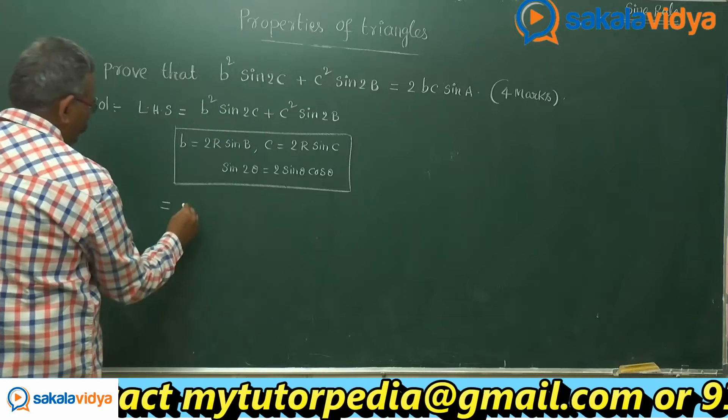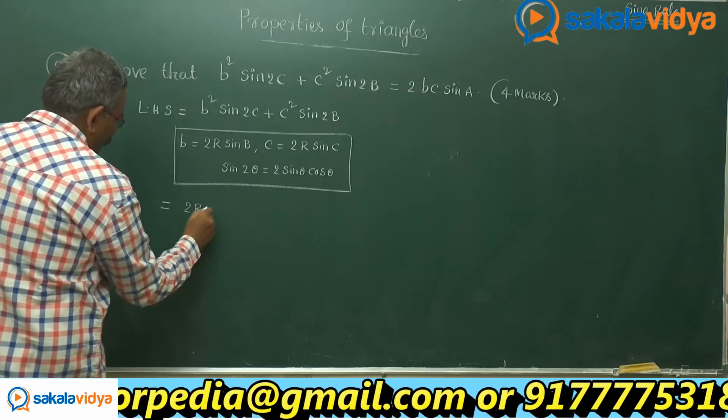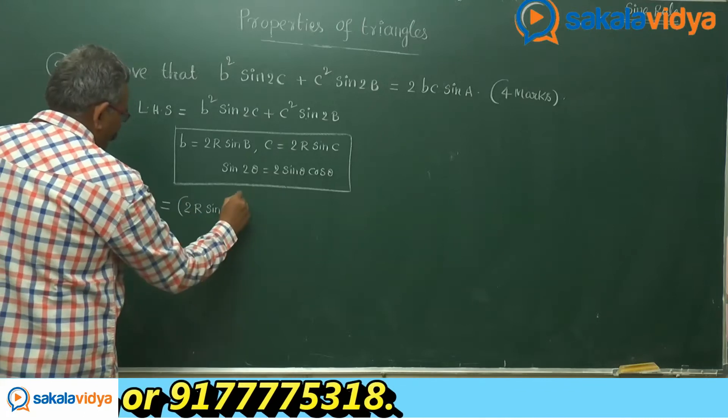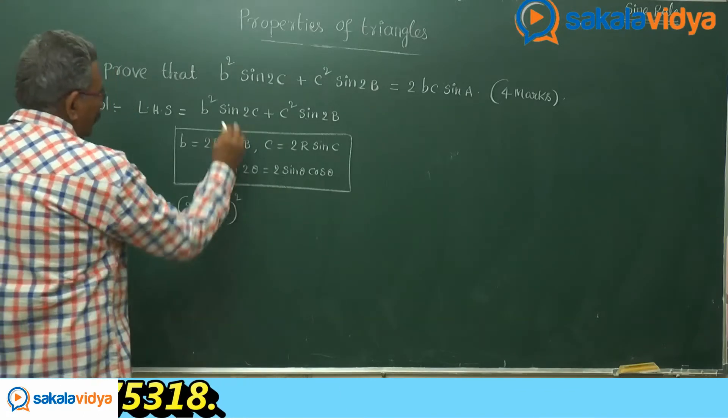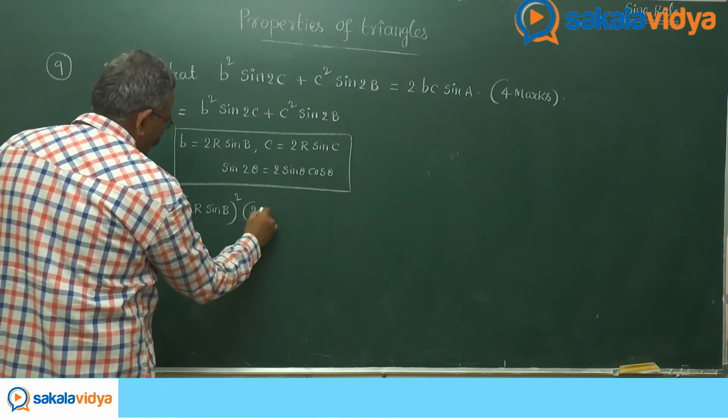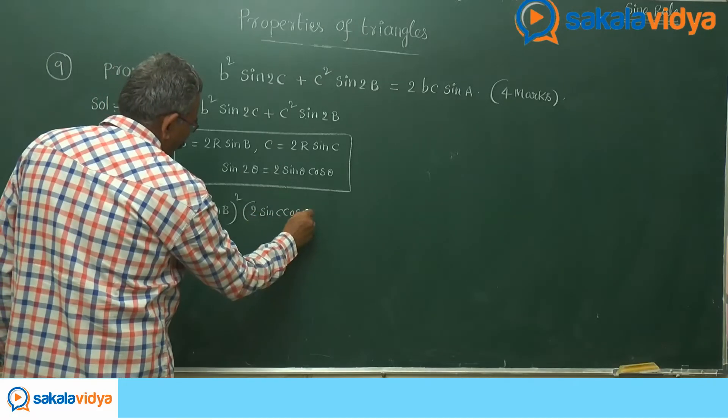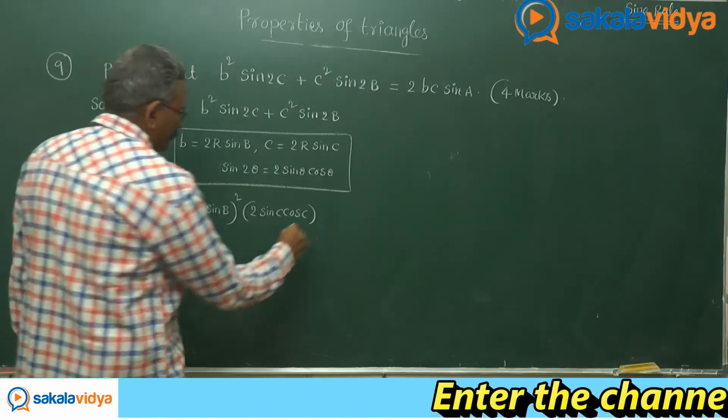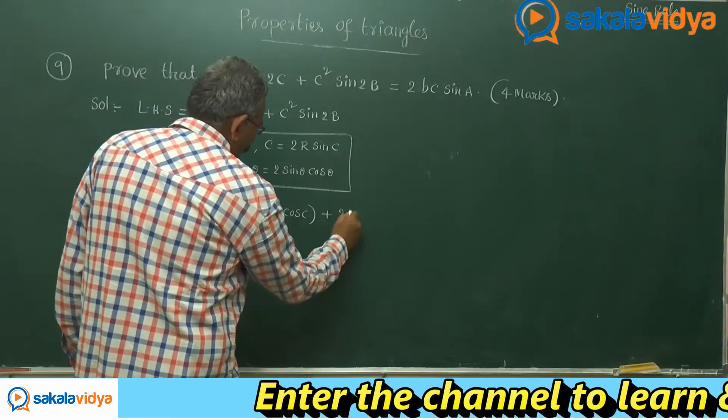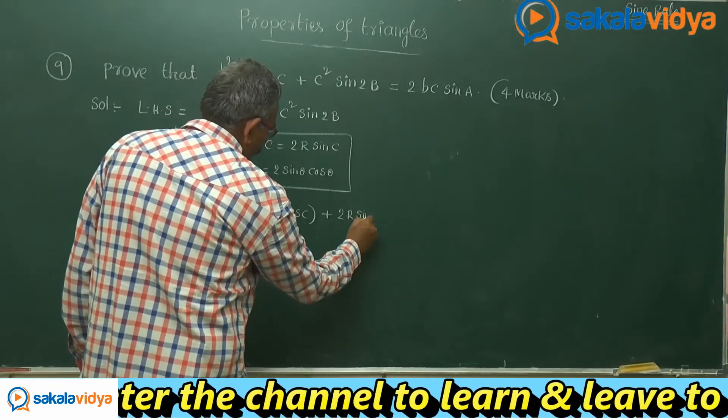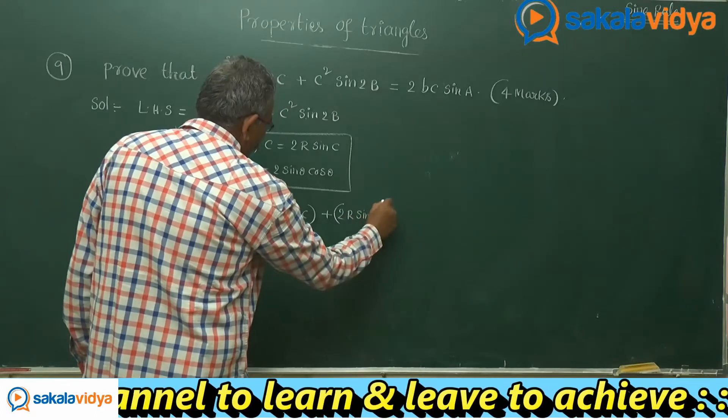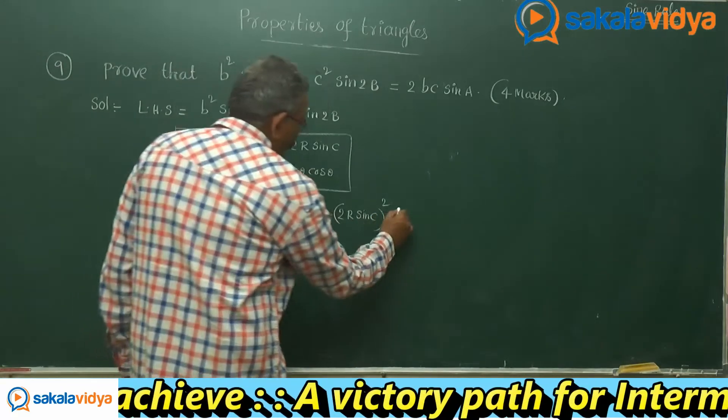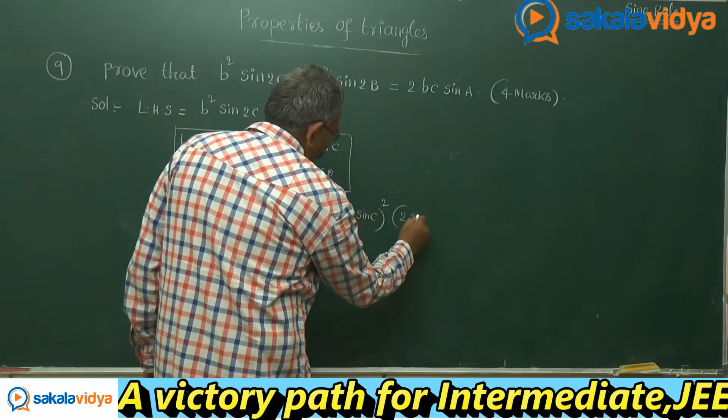b squared is 2r sin b whole squared, sin 2c means 2 sin c cos c, plus 2r sin c whole squared, sin 2b is nothing but 2 sin b cos b.